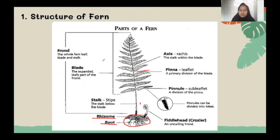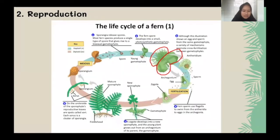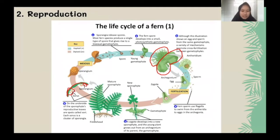Fern leaves have two functions. The first is the trophophyll, which is for photosynthesis. The second is the sporophyll leaf, whose function is to produce spores. On the back of the sporophyll leaves, there are sori and sporangia, and the sporangia contain the spores.